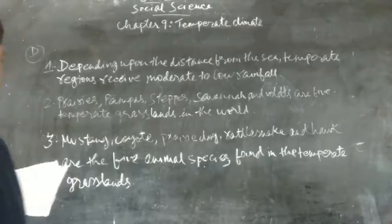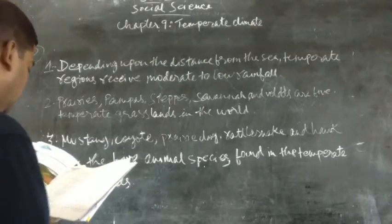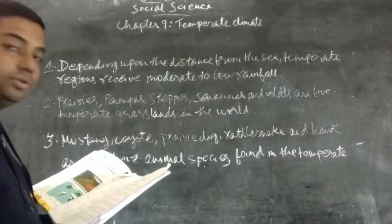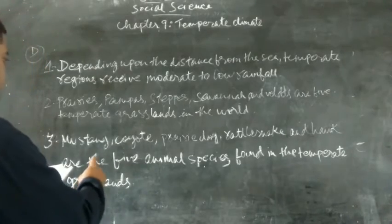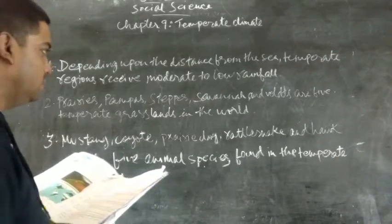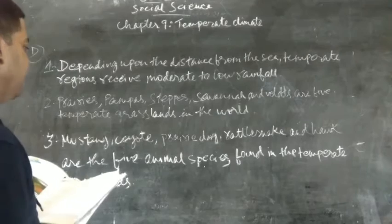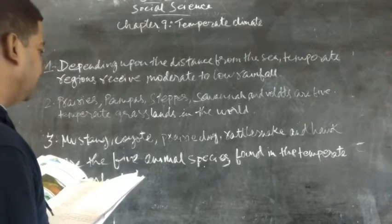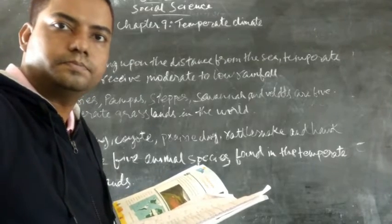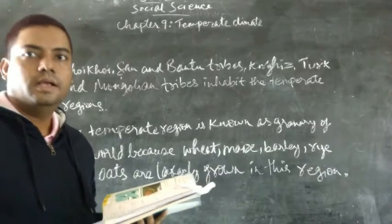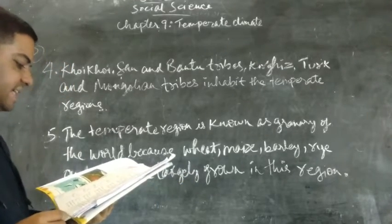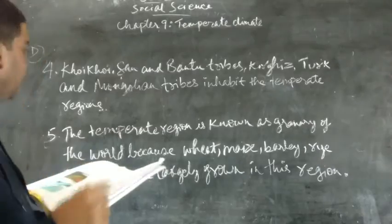Question number 3: Name any five animal species found in the temperate grasslands. The answer is: mustang, coyote, prairie dog, rattlesnake, and hawk are the five animal species found in the temperate grasslands.